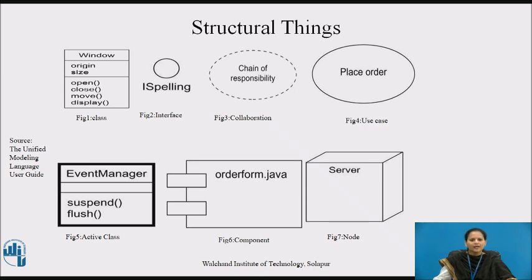Third, a collaboration defines an interaction which represents the implementation of patterns that make up a system. Graphically, a collaboration is rendered as an ellipse with dashed lines, usually including only its name, as in figure three. Next, a use case is a description of a set of sequences of actions that a system performs that yields an observable result of value to a particular actor. Graphically, a use case is rendered as an ellipse with solid lines, usually including only its name, as shown in figure four.